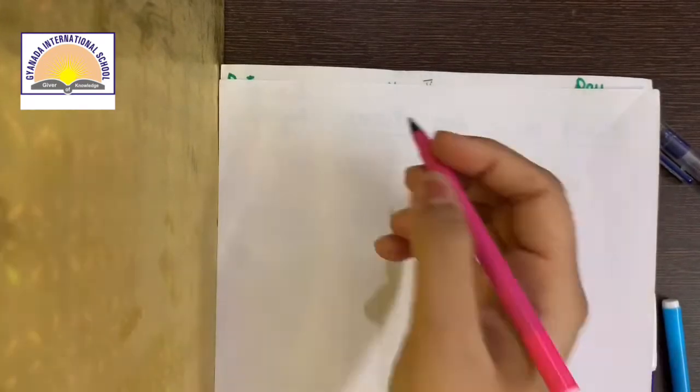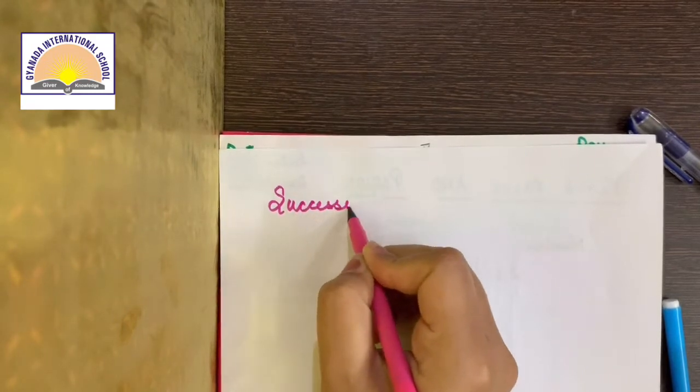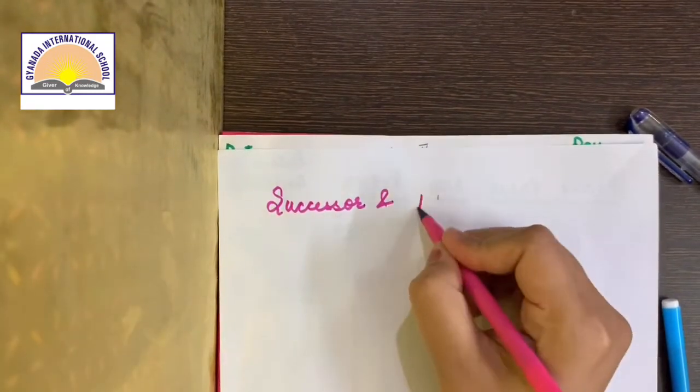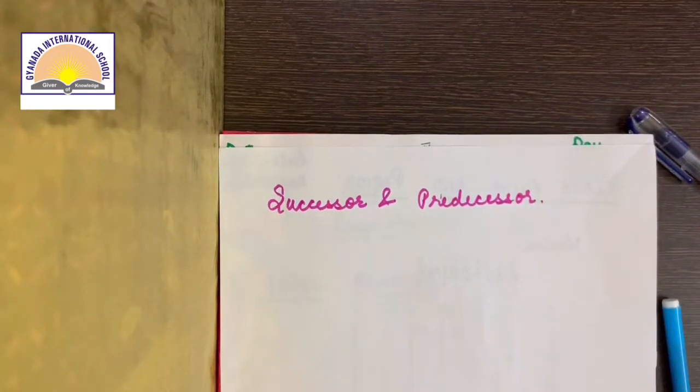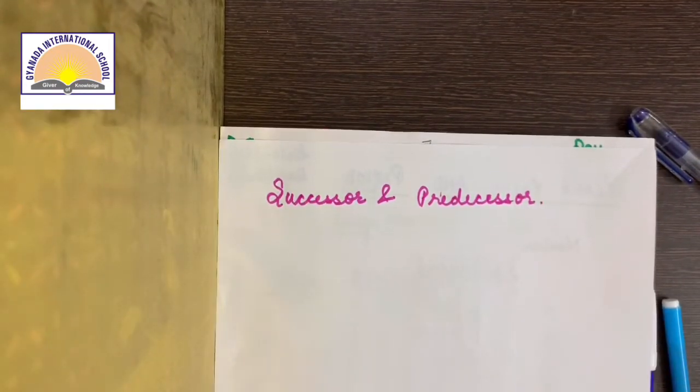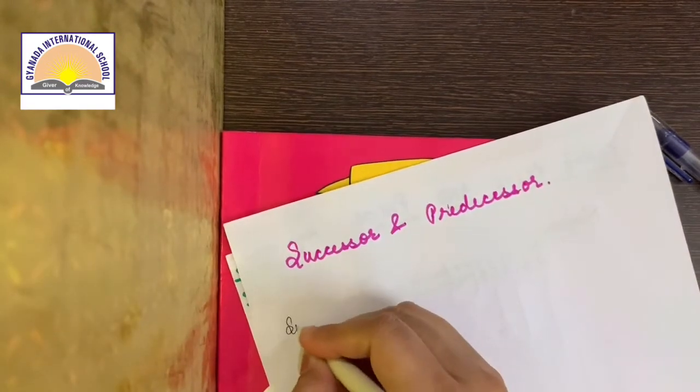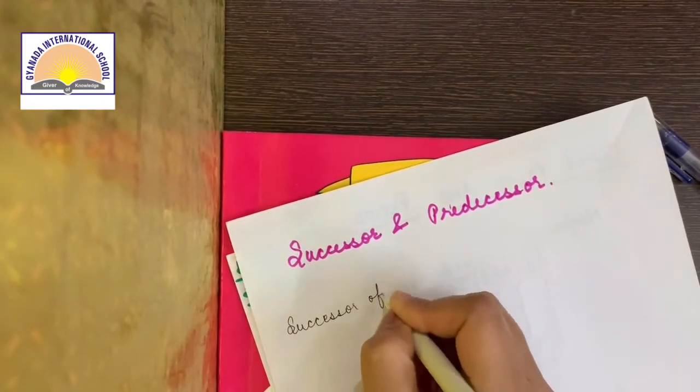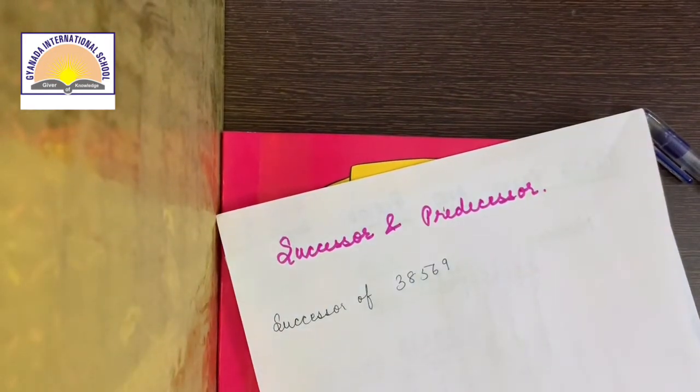Next topic. Kal wala ek topic revise karenge jo humne kal bhi kiya tha. Successor and Predecessor. See, when I have called successor ka matlab hota hai plus one. Aur predecessor ka matlab hota hai minus one. Lekin kai baar kaisa question aata hai students. Like you have to write the successor of 38569. Kaisa likhenge iska successor?